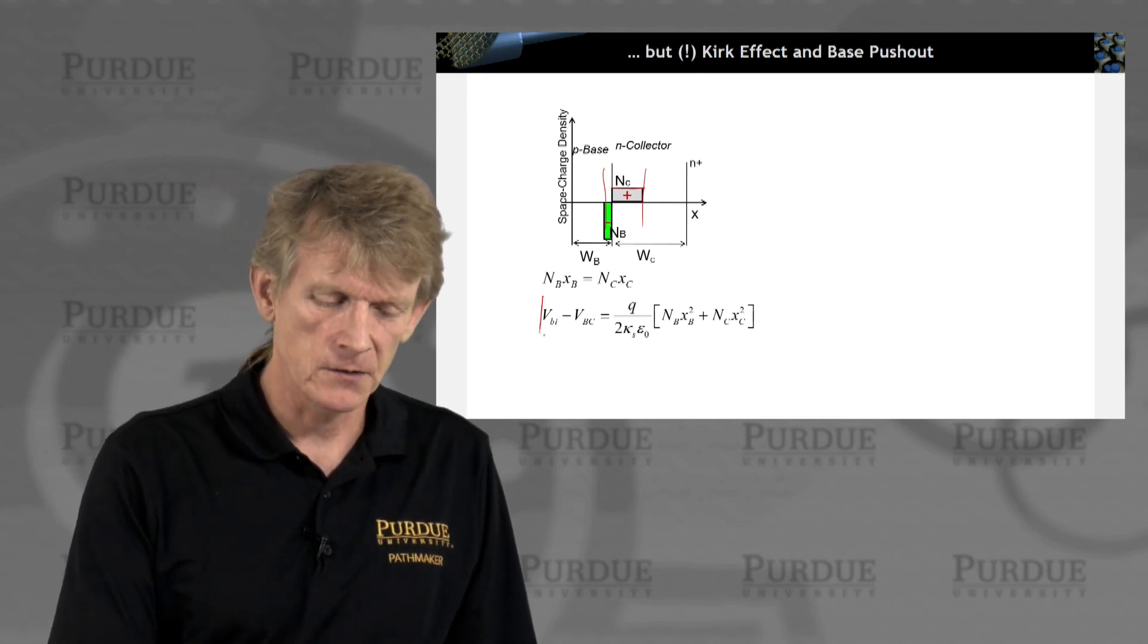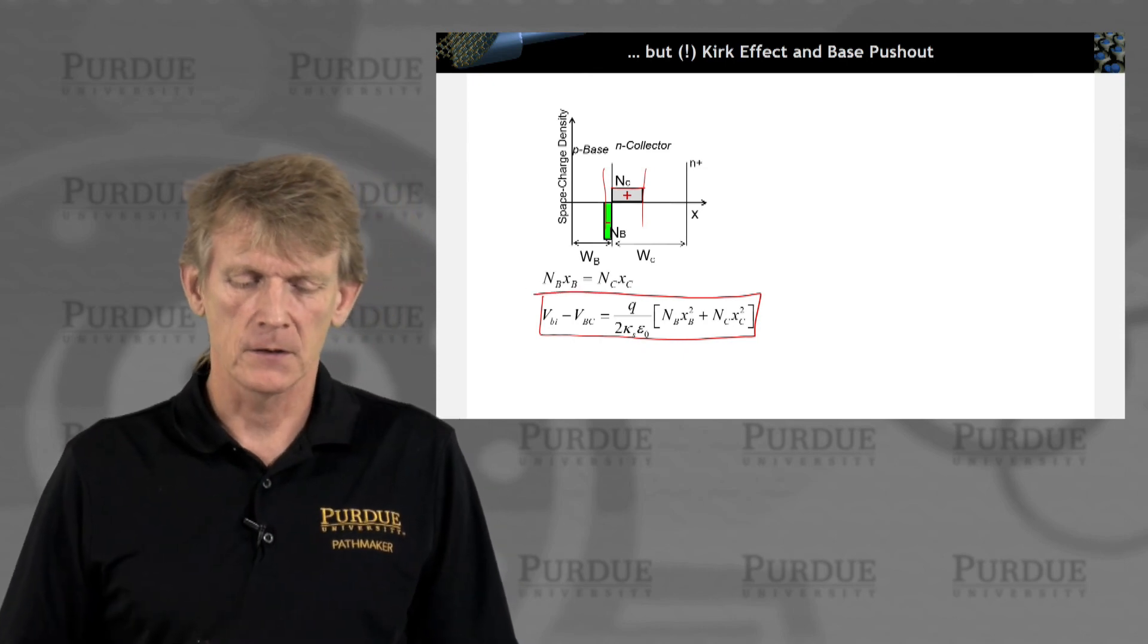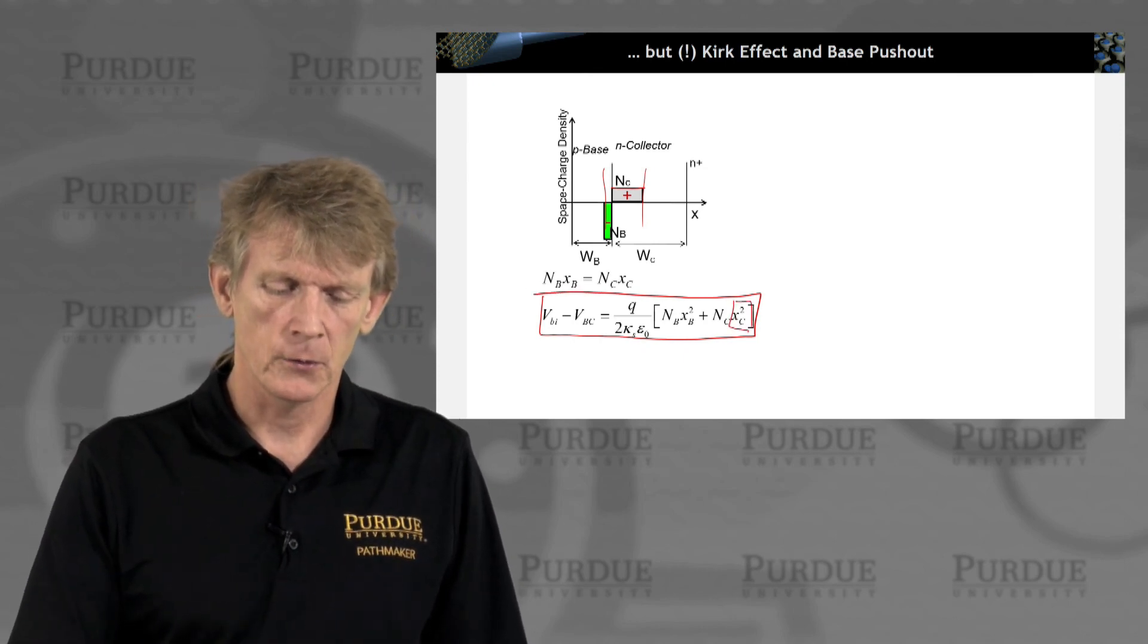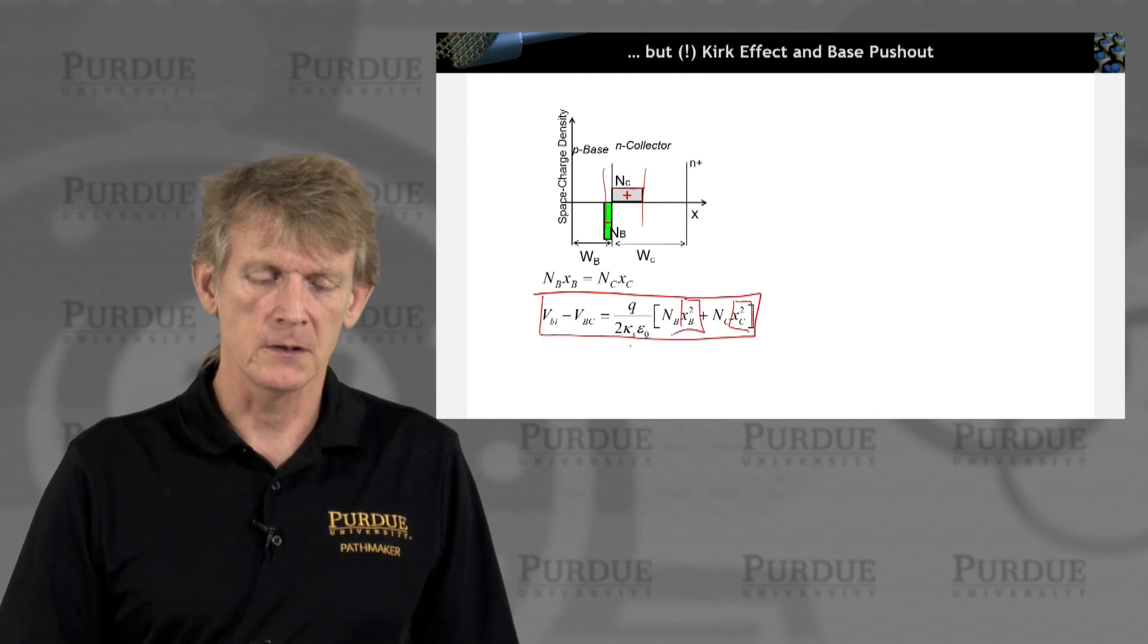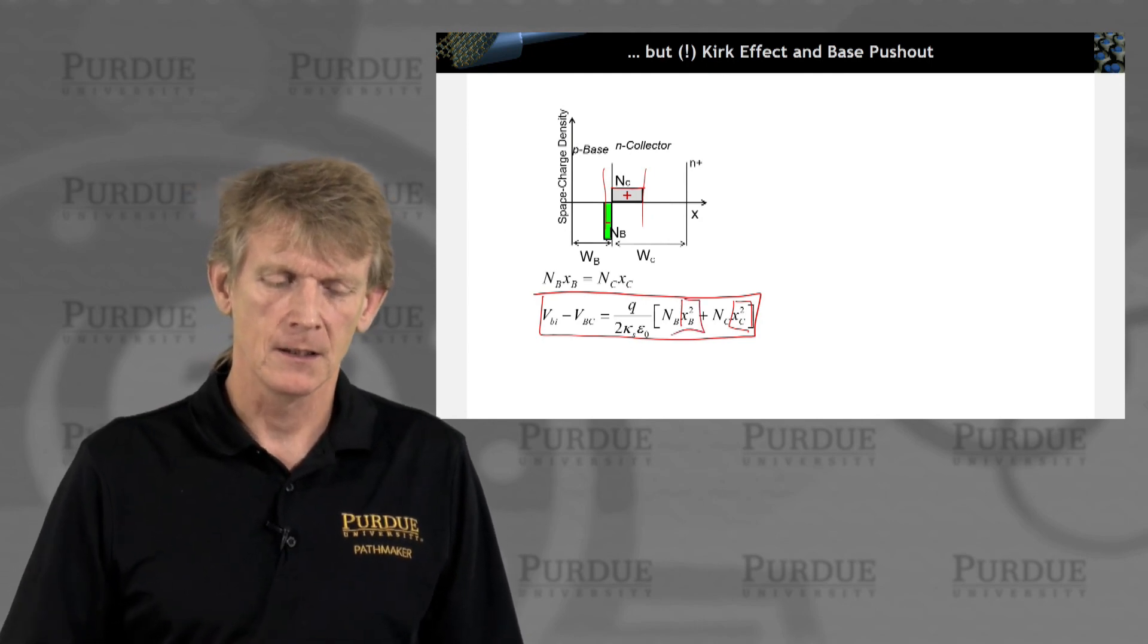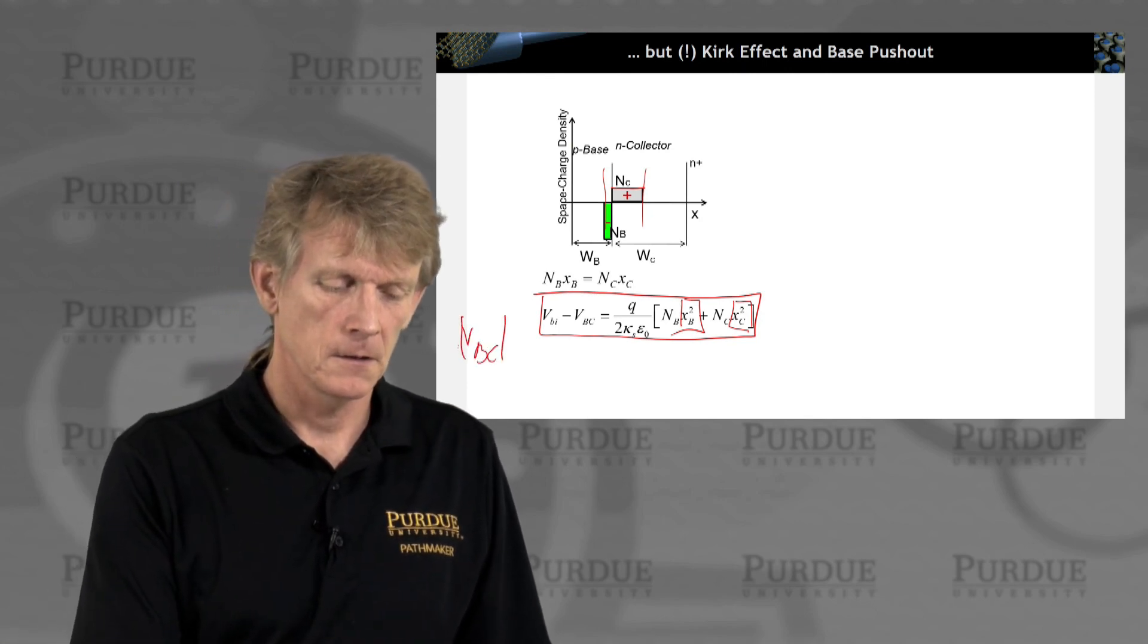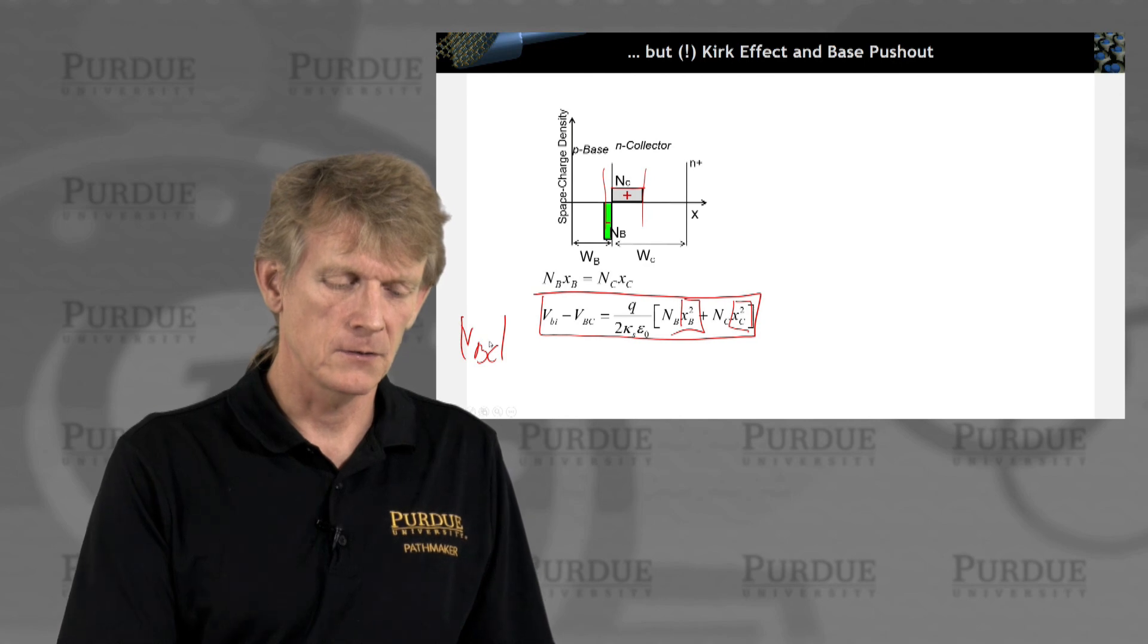We had written down expressions for the length of the collector depletion component and the base depletion components like that as a function of bias. And we just said we are negative bias, VBC.